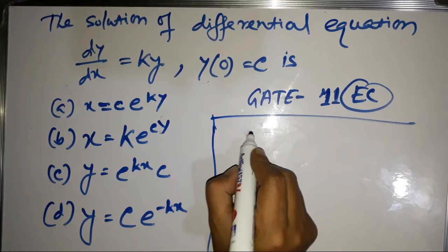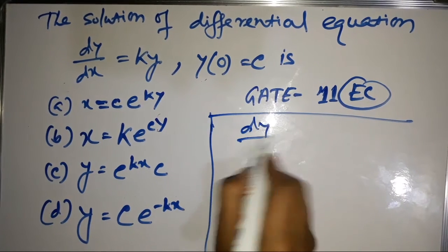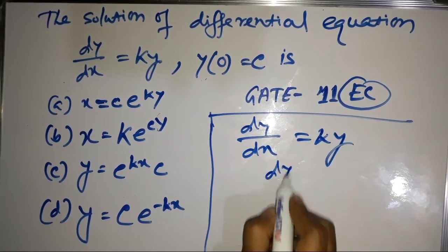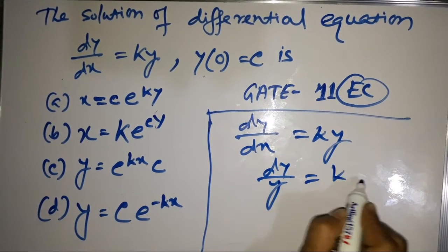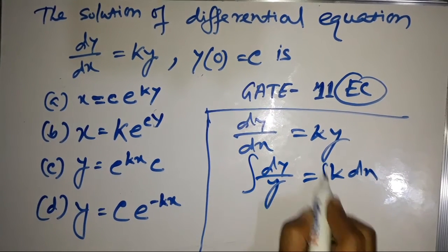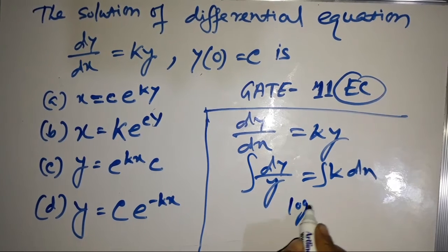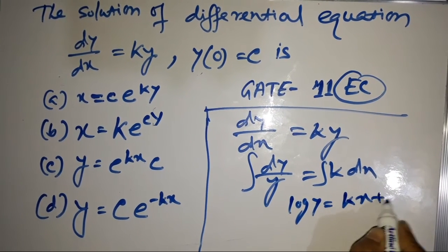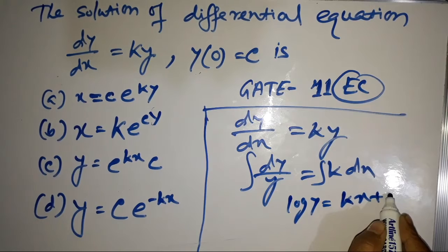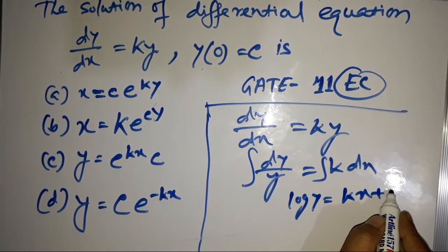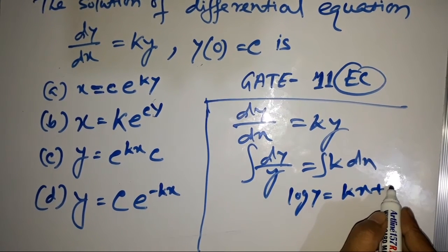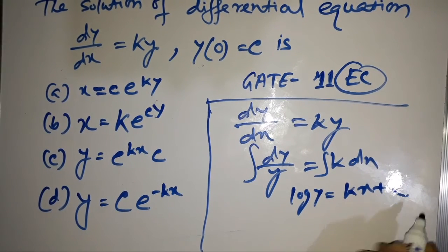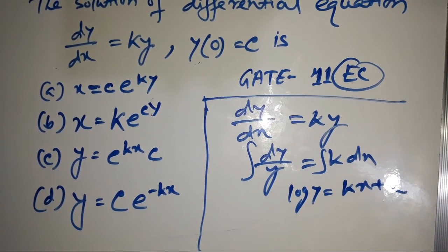तो चलिए यह math को solve करते हैं। dy/dx = ky, तो dy के नीचे y को ले लेते हैं और k dx ले लेते हैं। अब integration लगा देते हैं — तो यहाँ log y आ रहा है, और k बाहर जा रहा है, और integration of dx मतलब x, plus एक constant c₁ ले लेते हैं।